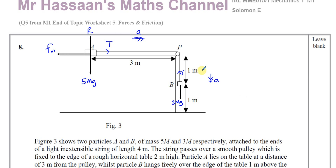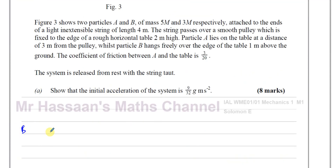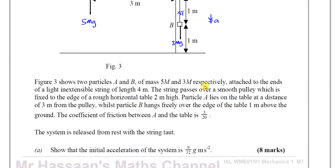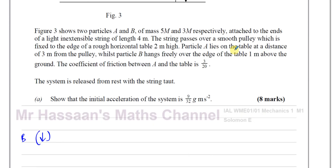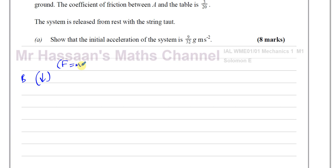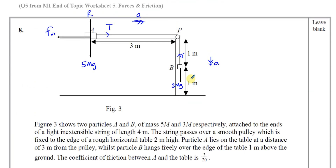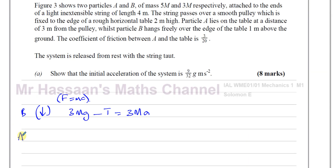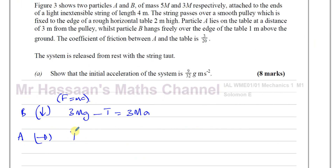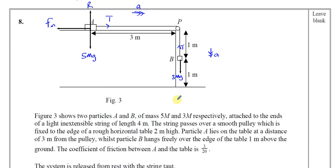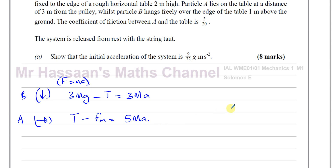We have drawn the forces on these objects, so let's make the equations of motion. Considering B first because it looks simpler — B is going to go towards the ground, so I'll take down as positive. The resultant force is 3mg minus T, which equals mass times acceleration: 3mg minus T equals 3m times a. That is the equation of motion for particle B. For particle A, moving towards the pulley, T minus F_max equals 5m times a. So we need to find F_max.